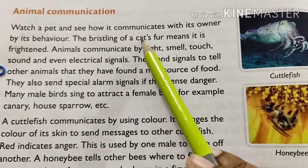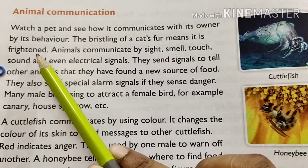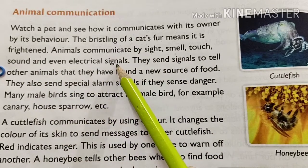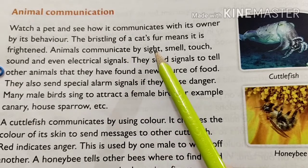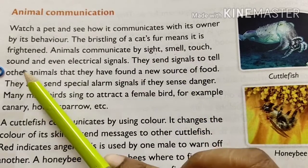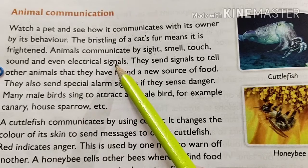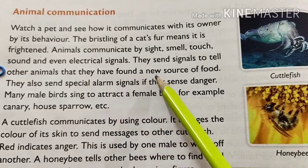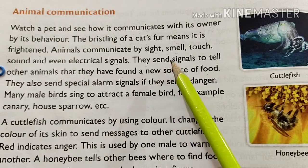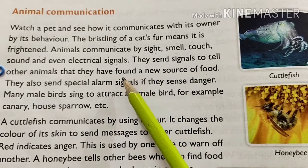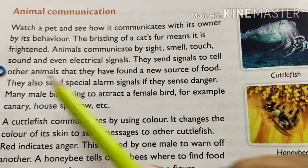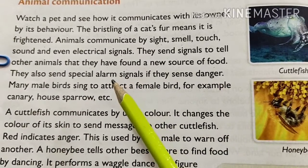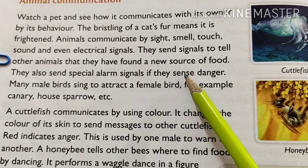Some animals use electric signals to tell other animals that they have found a new source of food. They also send special alarm signals if they sense danger.